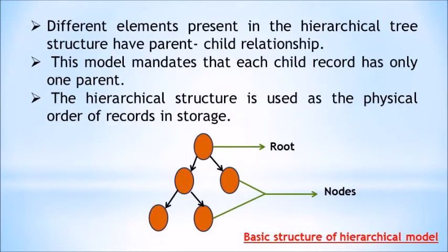Different elements present in the hierarchical tree structure have a parent-child relationship. This model mandates that each child record has only one parent. That means a parent element can have many children elements but a child element cannot have many parent elements. This model cannot represent many-to-many relationships among records. A tree structure may establish one-to-many relationships.